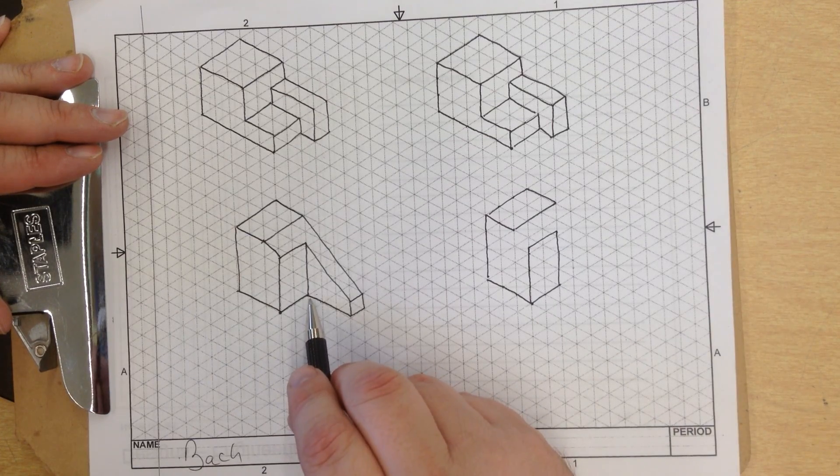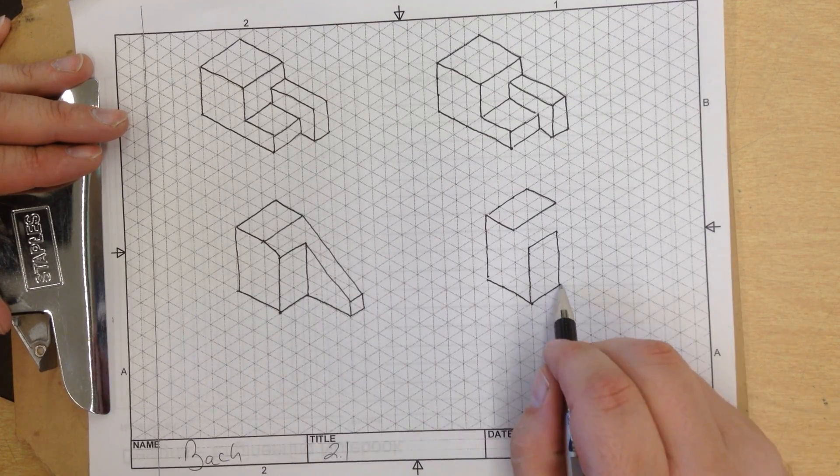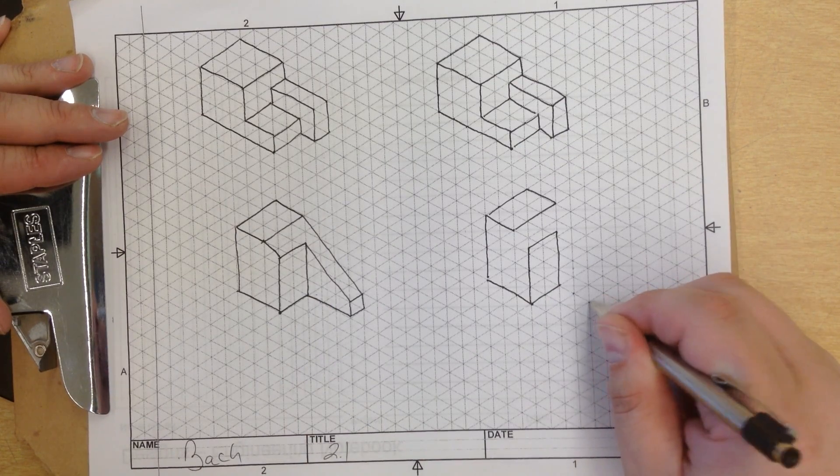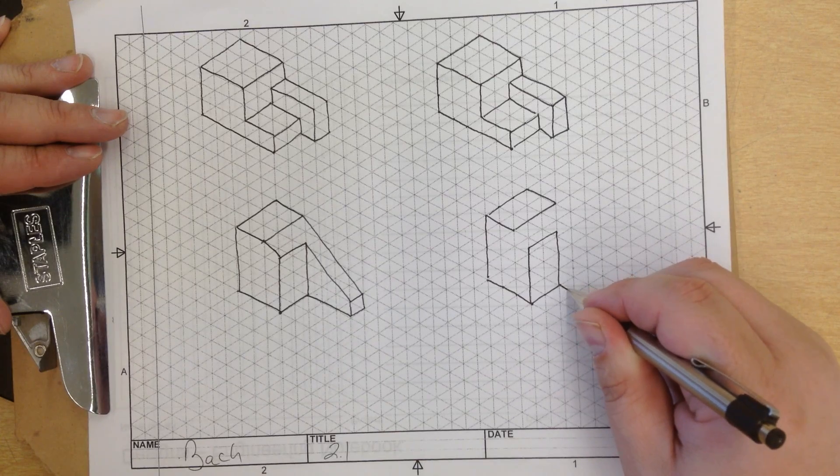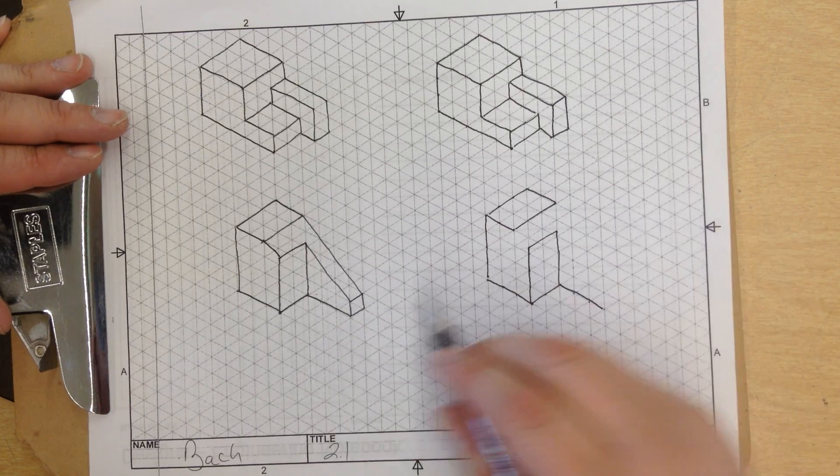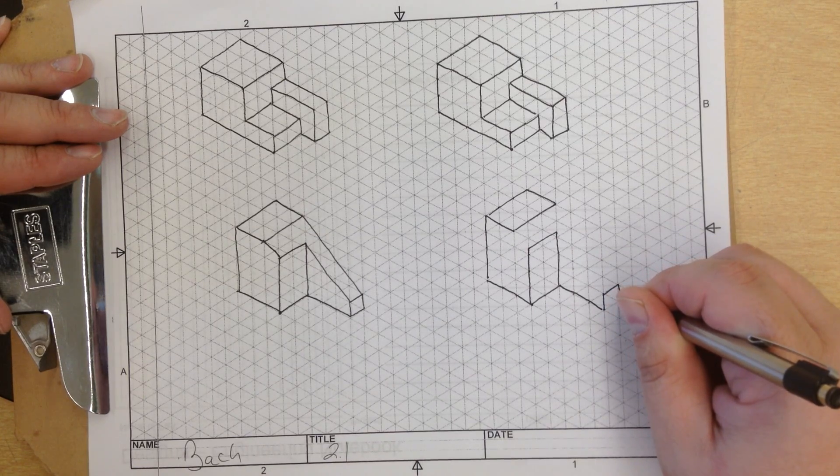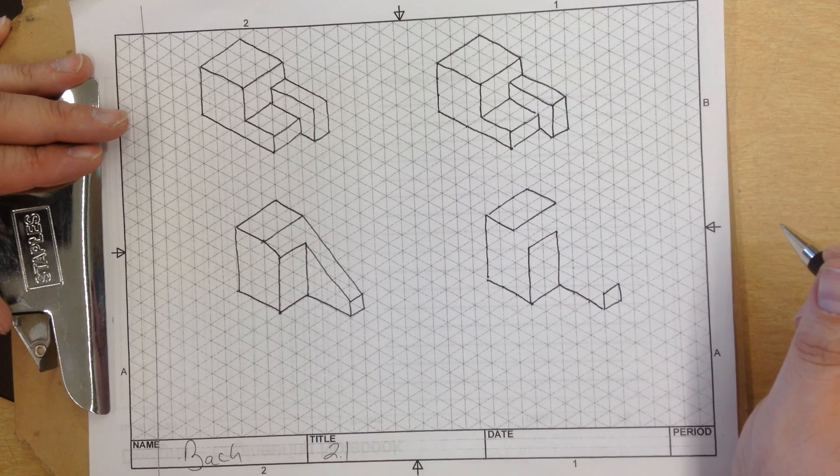Now next I'm going to come out here from this corner, which is right there. I'm going to go 1, 2, 3 units, so 1, 2, 3 units. Connect the line. Then it has a square that comes up, which is 1 unit square, just like so.